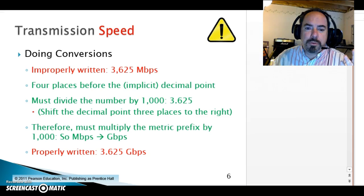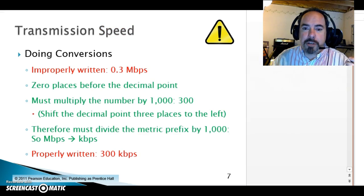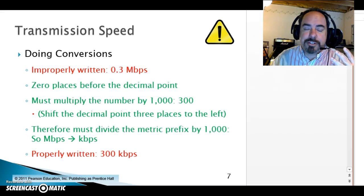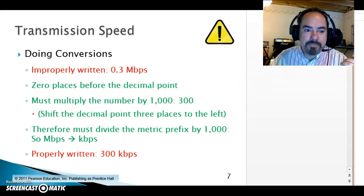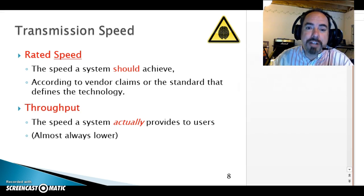It's important to be comfortable with the right way to talk about network transmission speed. You would never say 3,000 megabits per second — that's 3 gigabits per second. Similarly, you would never say 0.3 megabits per second — that's just 300 kilobits per second. It's a metric convention, and it's just the way networking people talk about speed. Everybody nods their head and says they understand, and then they miss it on the exam — there's a difference between rated speed and throughput.